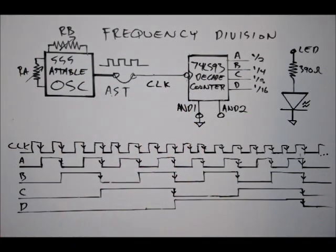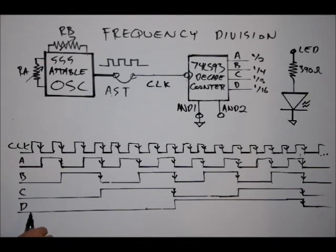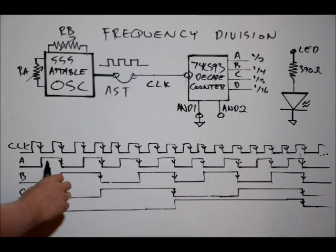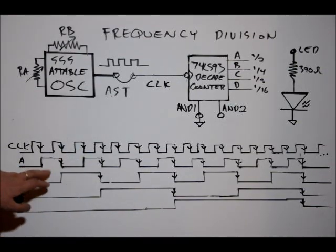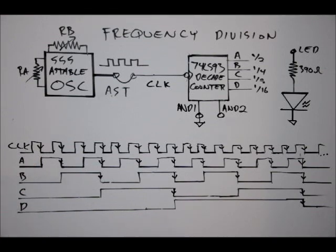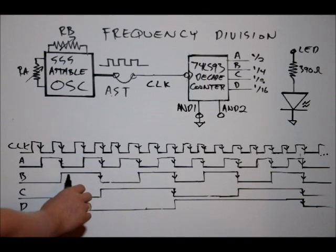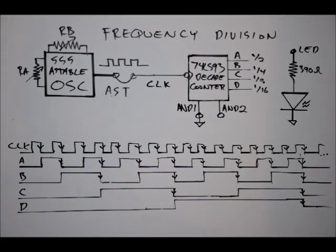Now, the neat thing here is we can also look at this as a binary count. Right here is zero. Here is one. Here is two. And I say that because this has a binary weight of one, two, four, and eight. So here we have one. Here we have two, only B is high, so B is worth two. So here, B and A are both high, so that's two plus one is three.